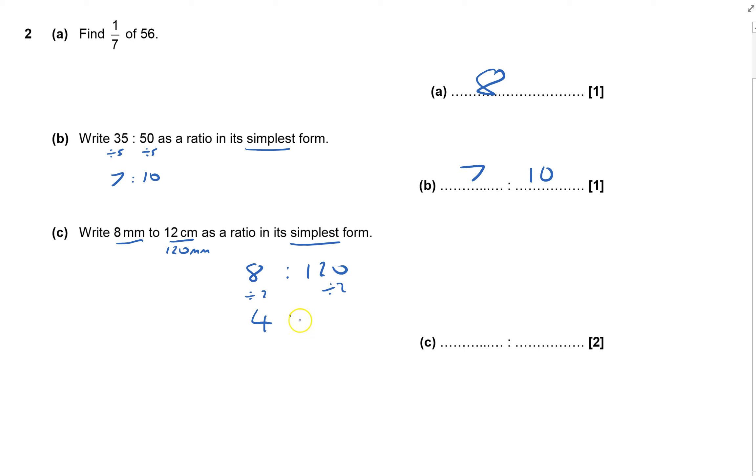That would be 4 to 60. Well, divide by 2 again, which would be 2 to 30. Still divide by 2 - 1 to 15, and that's as low as it can go. So 1 to 15.